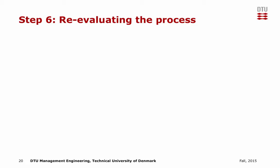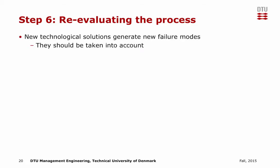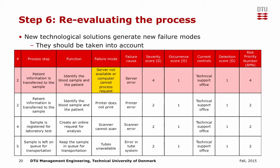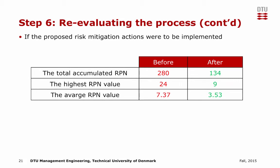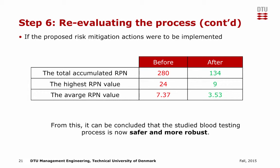In step 6, the process is re-evaluated. It should be noted that new technology solutions generate new failure modes that should also be taken into account. For example, for the failure mode of incorrect data, the risk mitigation was to introduce a computer system and automatic printers. With that, a new failure mode has been created: a server failure may now influence the outcomes of the process, and this new failure mode needs to be evaluated as well. If the proposed risk mitigation actions were implemented, the total accumulated RPN would decrease significantly from 280 to 134. The new highest RPN score of an individual failure mode would go from 24 to 9, and the average RPN value would decrease from 7.37 to 3.53, concluding that the blood testing process is now safer and more robust.